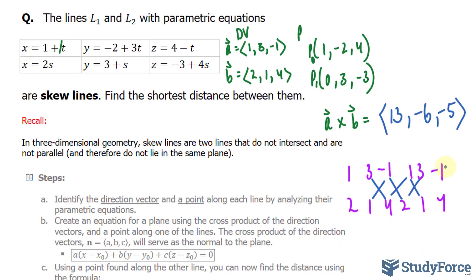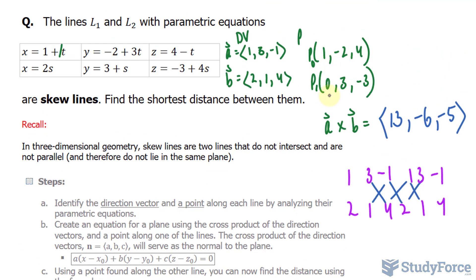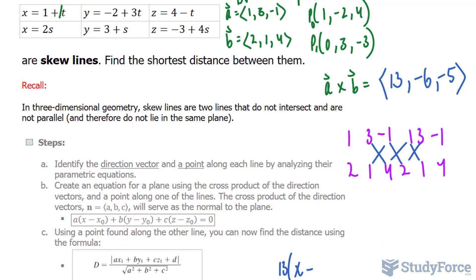And it will actually serve as the normal to this plane that we're creating. And because it serves as the normal to that plane that we're creating, we can actually substitute 13, negative 6, and negative 5 into this formula to create an equation. So we have 13 bracket x minus, and for x sub 0, y sub 0, and z sub 0, we can actually use any one of these points that we like. Let's choose this one. In the end, it doesn't matter. So if we choose this one, I'll put 1 here.